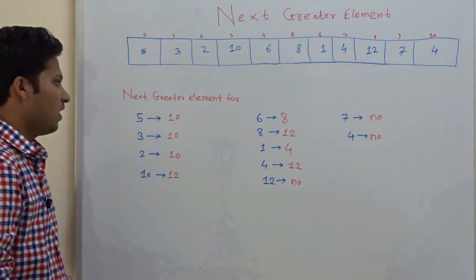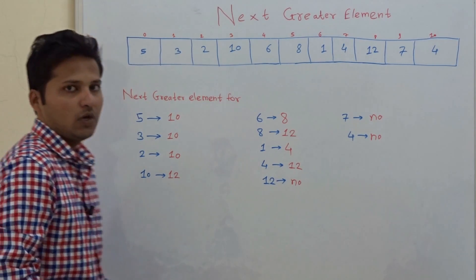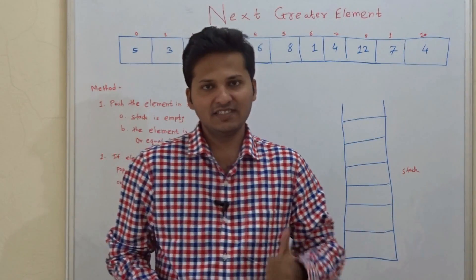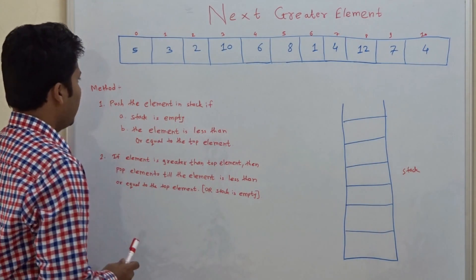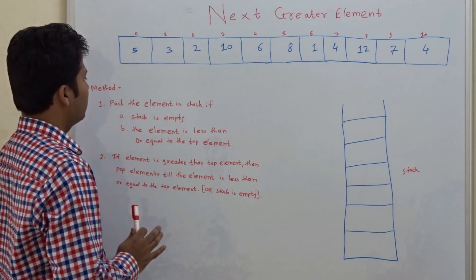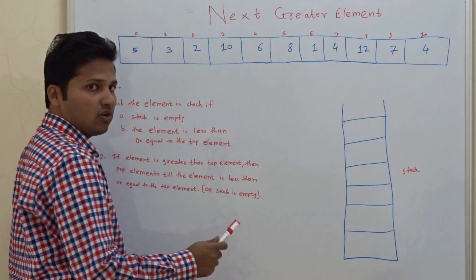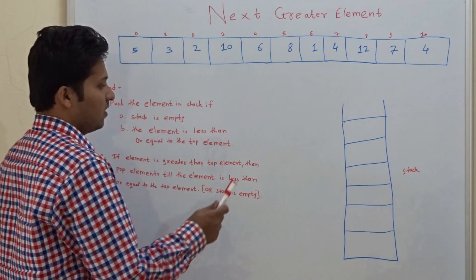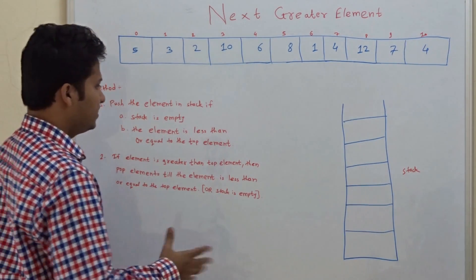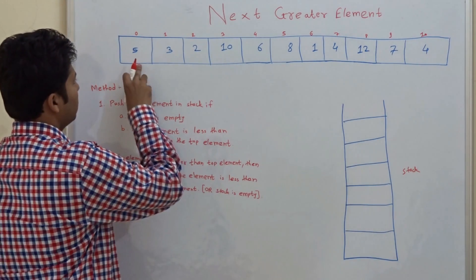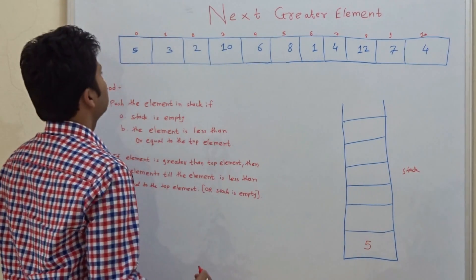So this is the way we find the next greater element in the array for each element. Now I will tell you the algorithm. We are using a stack here. We will push elements into the stack, and if the top element of the stack is greater than the element which is to be pushed, we handle it accordingly. Let's see step by step.